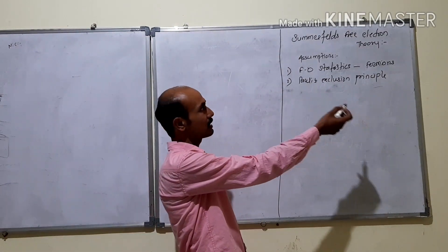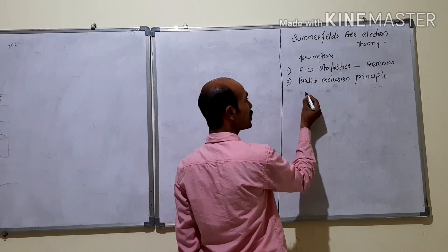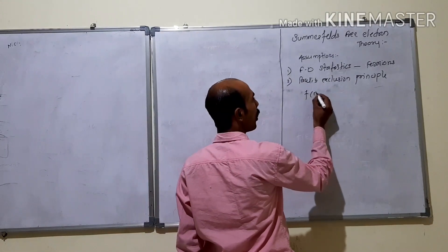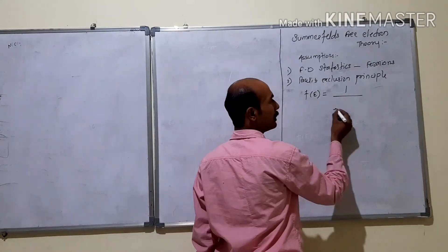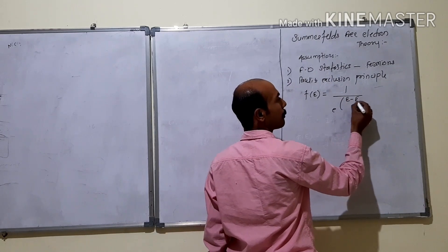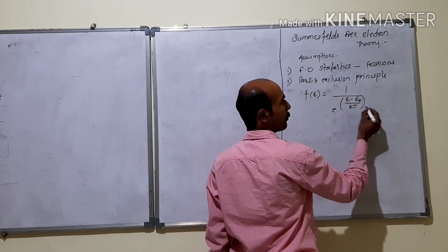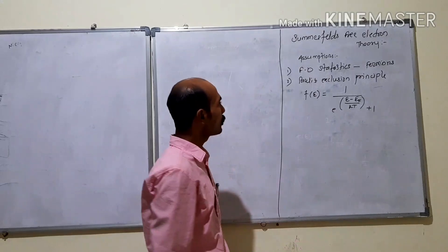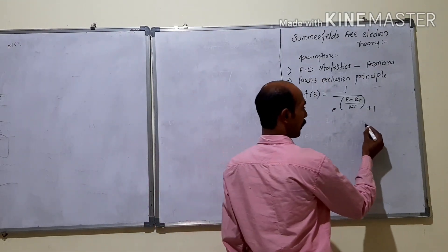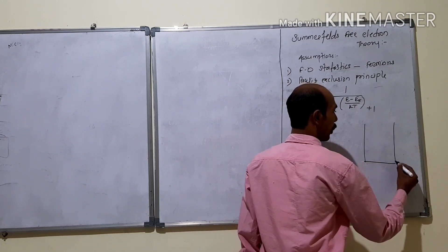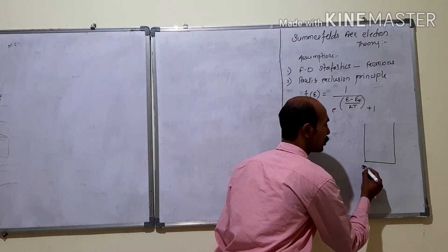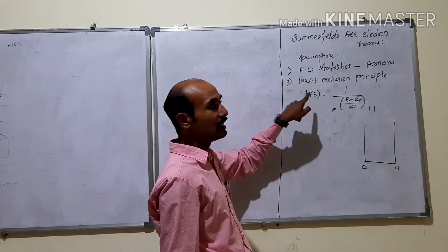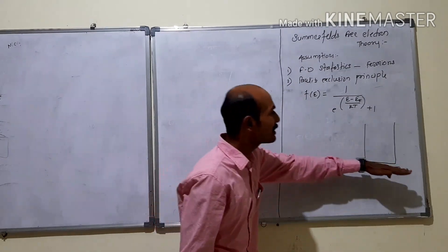Since it obeys Fermi-Dirac statistics and the Pauli exclusion principle, the distribution function of electrons inside the metal is given by: f(E) = 1 / (e^((E - EF) / kT) + 1), where E is the energy of the electron and EF is the Fermi energy. If we consider a material like a 1D or 3D box, this Fermi-Dirac distribution function gives the distribution of electrons inside the metal.